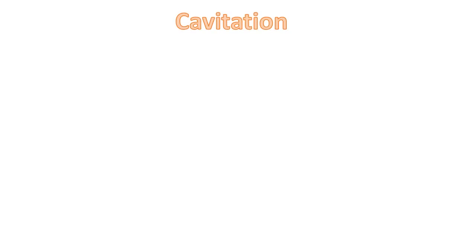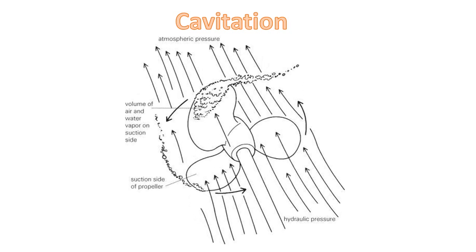Cavitation occurs when vapor bubbles form ahead of the pump impeller due to pressure drop in the pumping system. As the bubbles enter the pump and are swept along the impeller vanes, they implode due to a rising external pressure around the bubble.